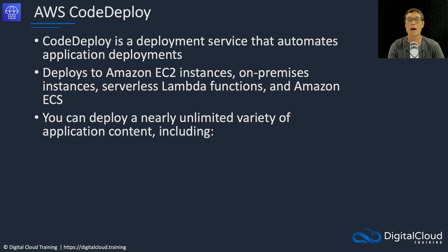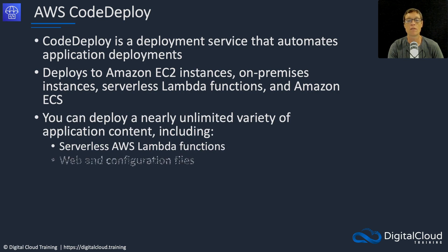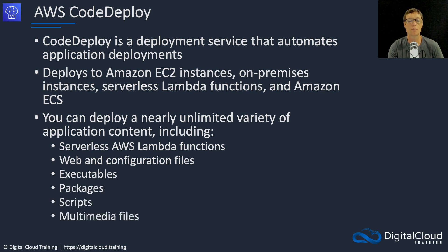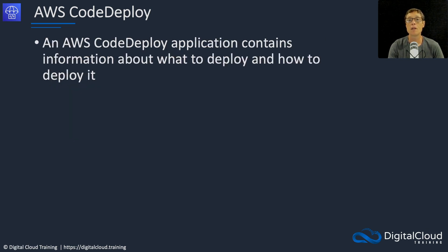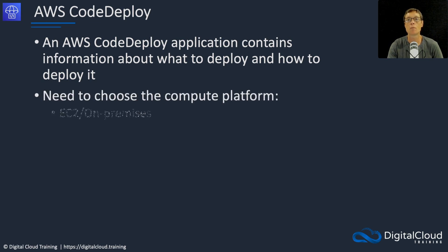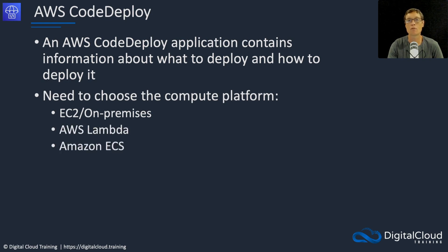You can deploy a nearly unlimited variety of application content such as serverless Lambda functions, web and configuration files, executables, packages, scripts, and multimedia files. A CodeDeploy application contains information about what to deploy and how to deploy it, and you need to select your compute platform: either EC2 or on-premises, Lambda, or Amazon ECS.